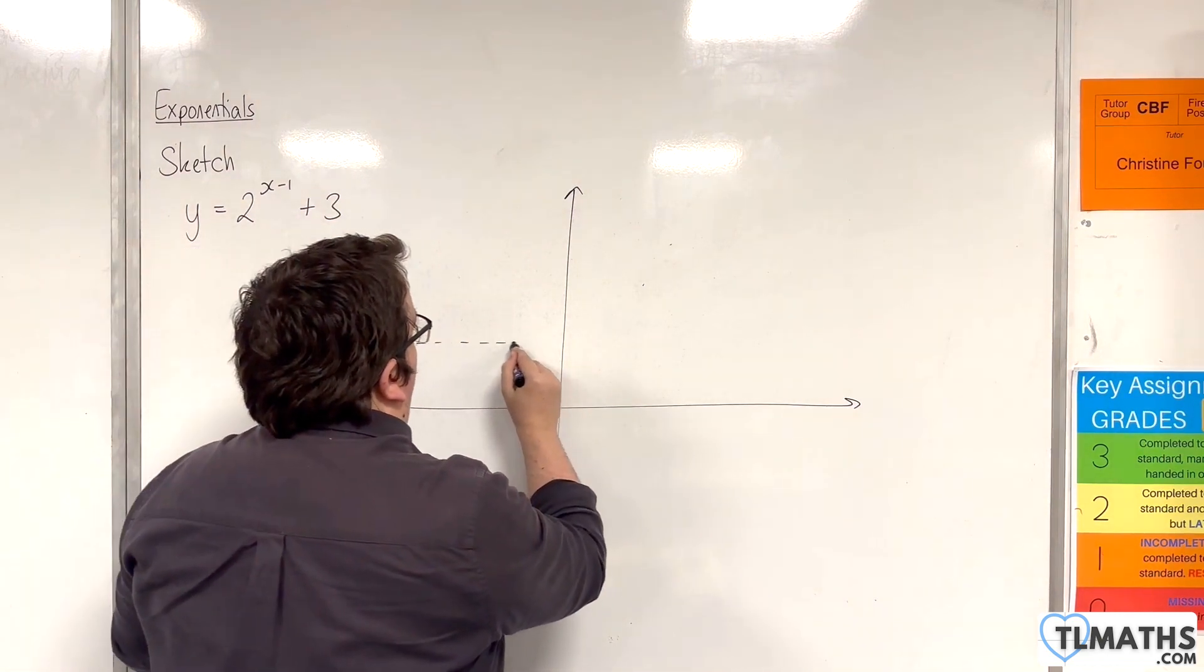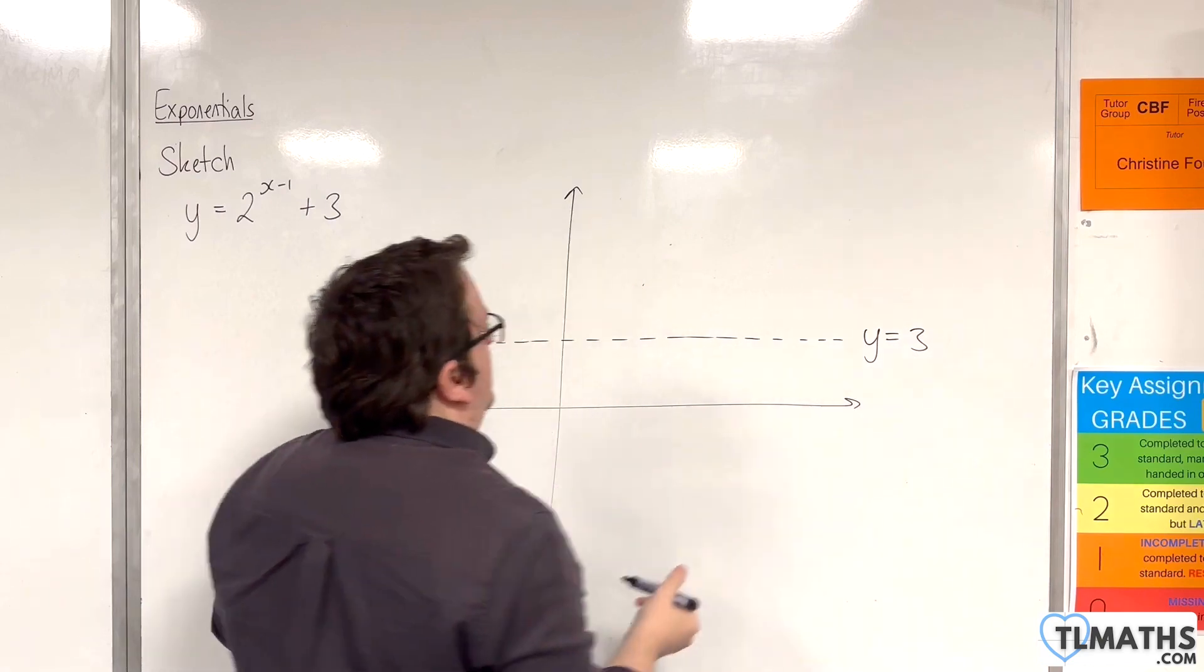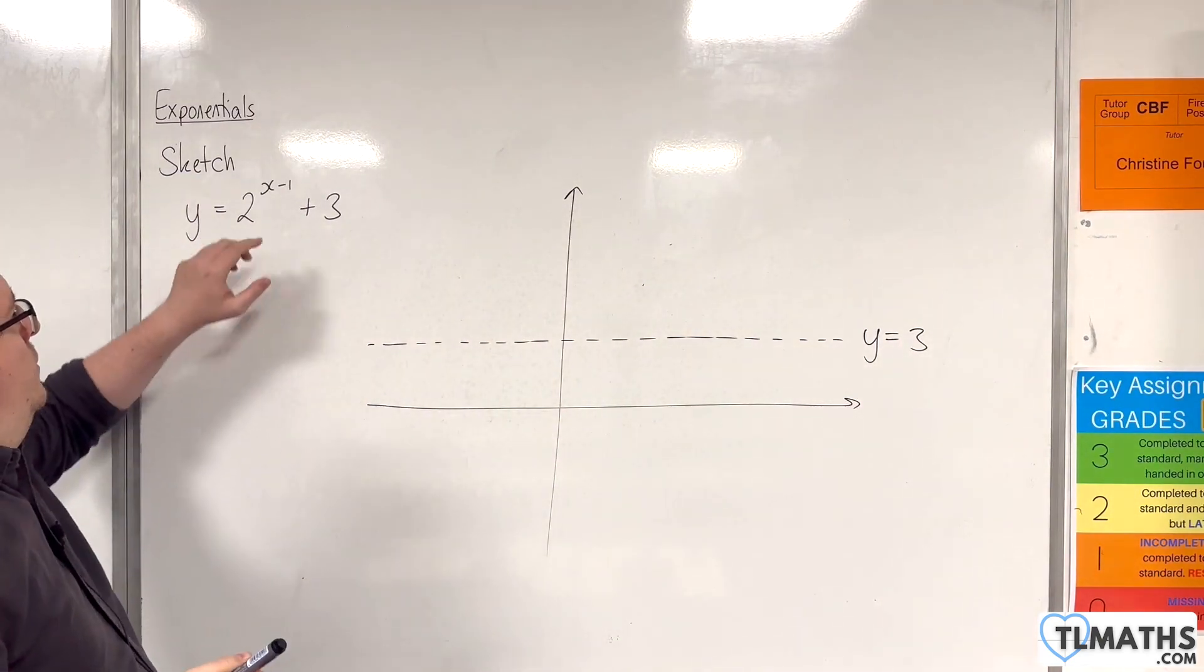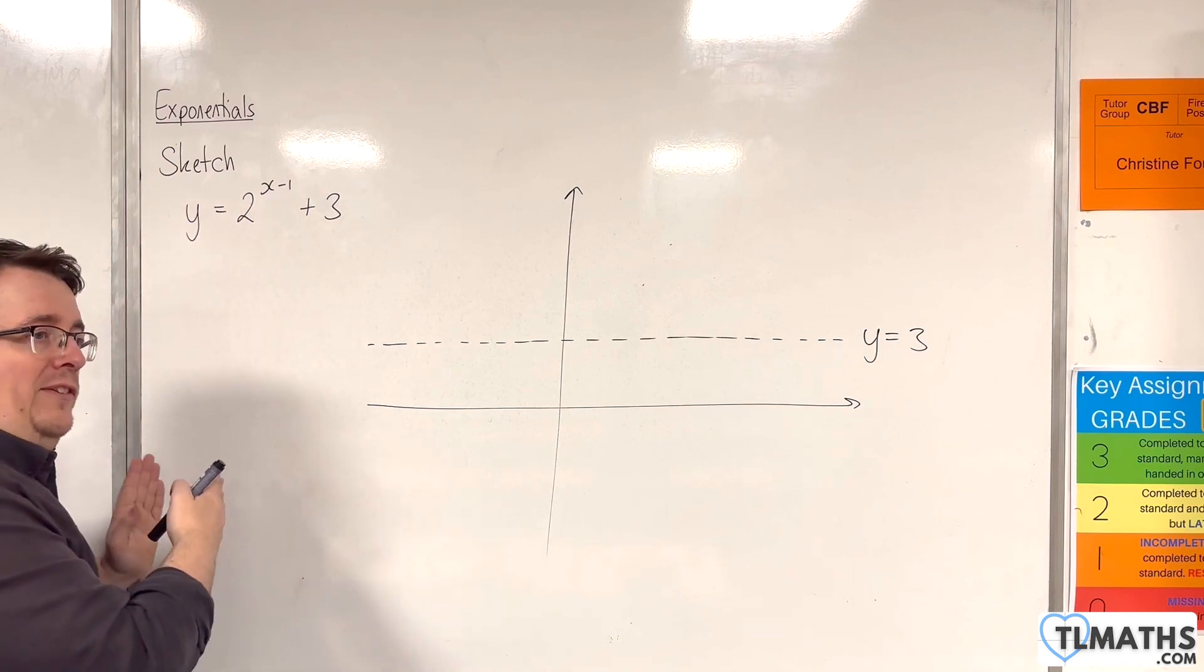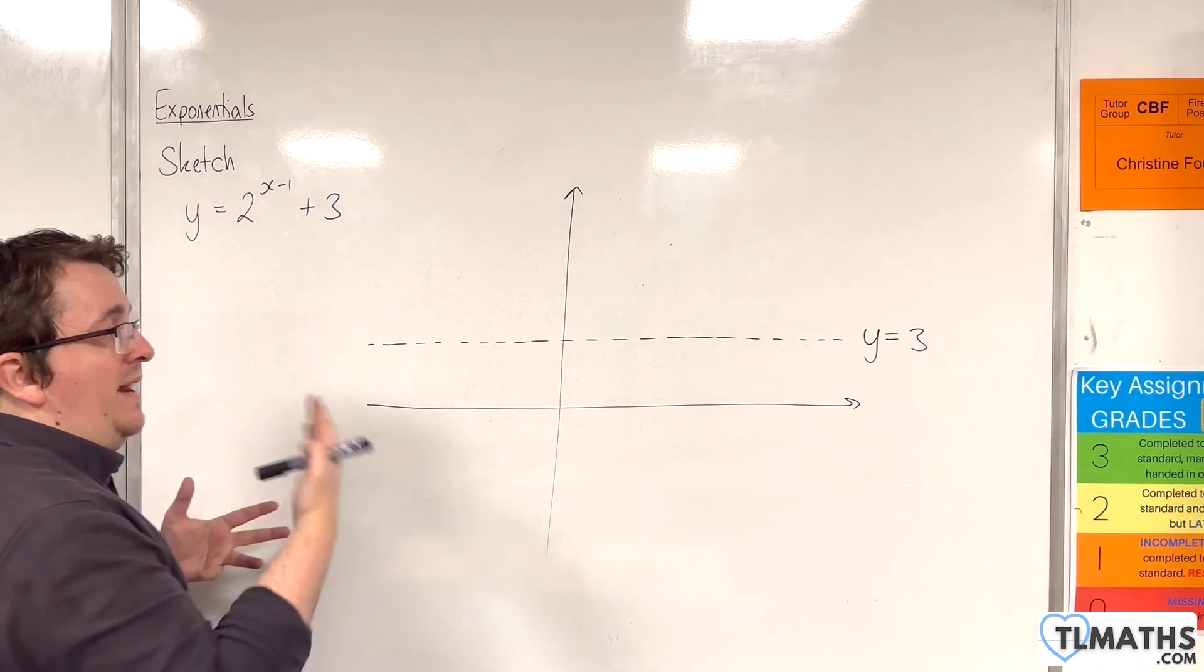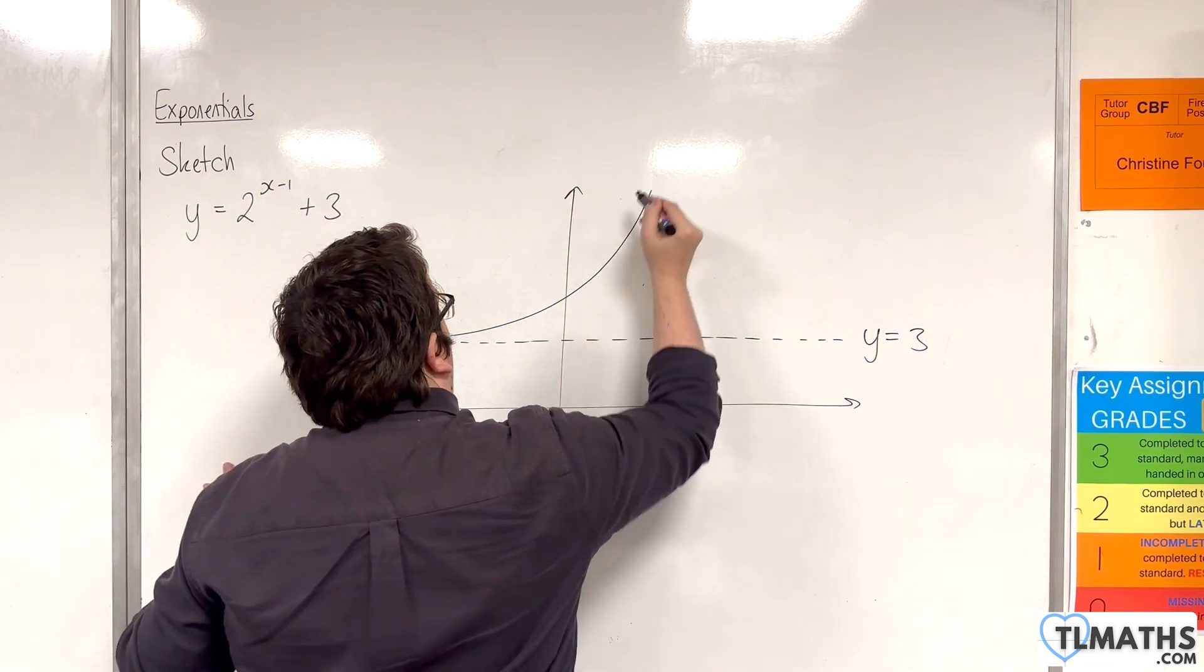So that is the first thing I want to draw on. Now, the fact that we've got x minus 1, all that means is that it's been translated one unit to the right. So we still have an exponential curve. It'll still look very much like we used to.